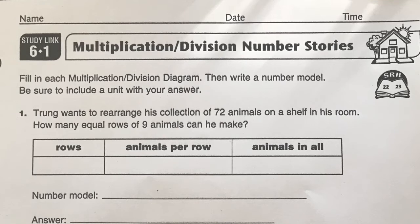So he has a collection of 72 animals. That sounds to me like animals in all. All of his animals he has is 72. And this says how many equal rows, so it's asking us how many rows.